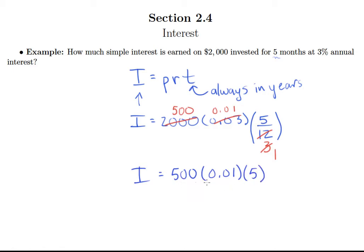Remember when we multiply by 0.01, that's 1 times 500 is 500, and then you can move the decimal back two places. So 500 times 0.01 is actually 5, and so 5 times 5 is 25. So our interest on this account after five months is 25 dollars.